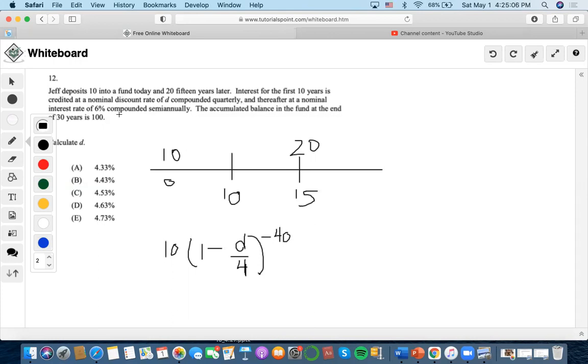Thereafter, a nominal interest rate of 6% compounded semiannually. We do 6% divided by 2, which is 0.03 plus 1, so 1.03.